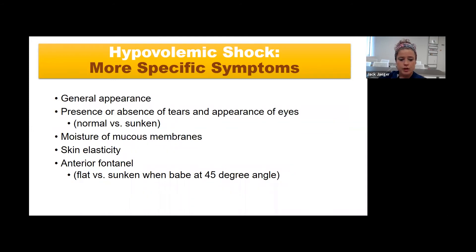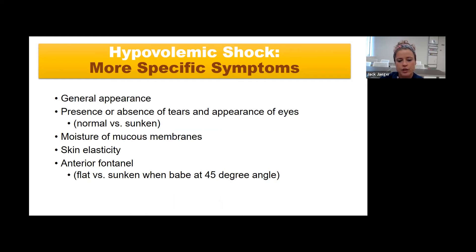More specific signs of hypovolemic shock include sunken eyes, dark circles under the eyes, bright red lips, completely dry mucous membranes, and a sticky mouth. Check skin elasticity. For children less than 15 to 18 months old, check the fontanelle—with the baby at a 45-degree angle, a sunken fontanelle indicates hypovolemia.